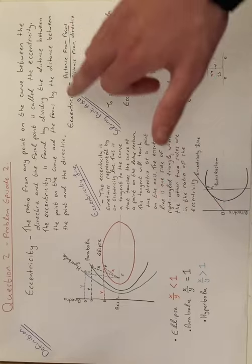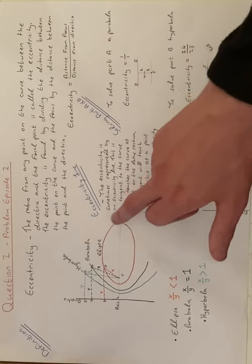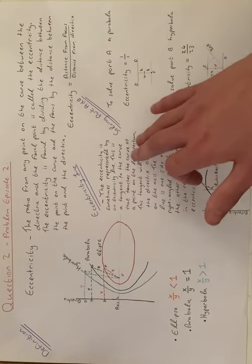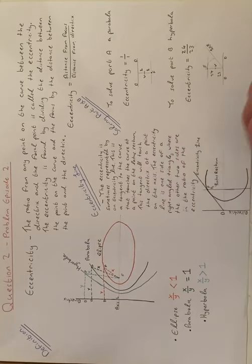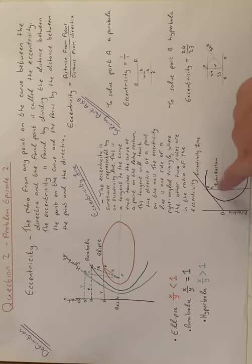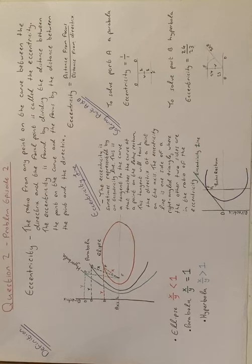Related to the question then, your eccentricity line is what we needed. The eccentricity is sometimes represented by an eccentricity line. This is a tangent to the curve that touches the curve at a point on the latus rectum. This tangent will touch the directrix at a point on the axis. The eccentricity line is one side of a right angle triangle where the other two sides are in the ratio of the eccentricity.